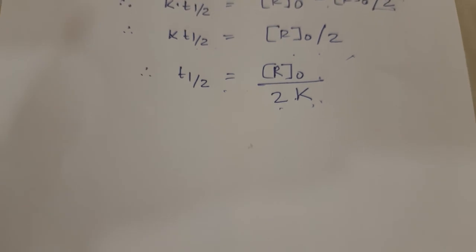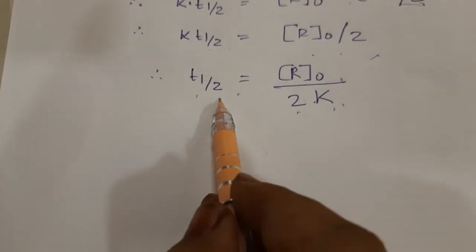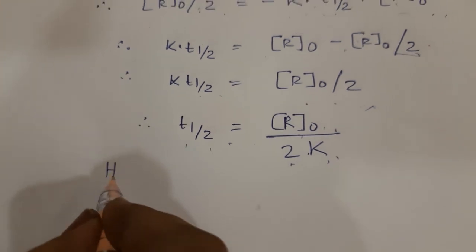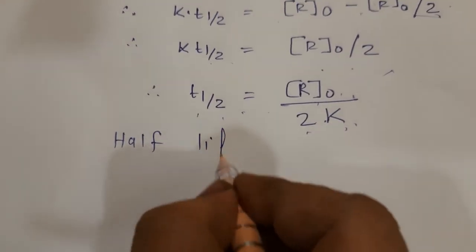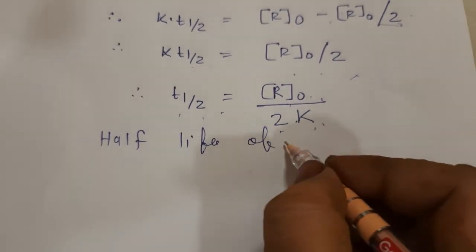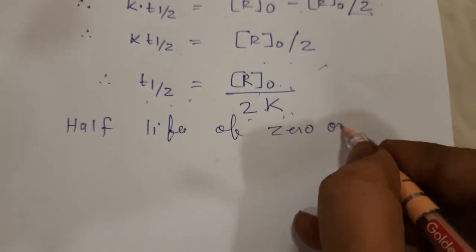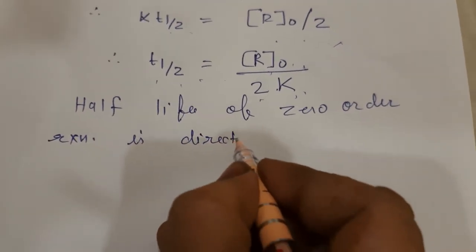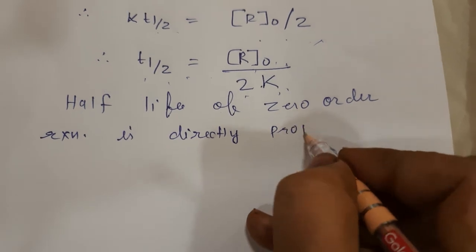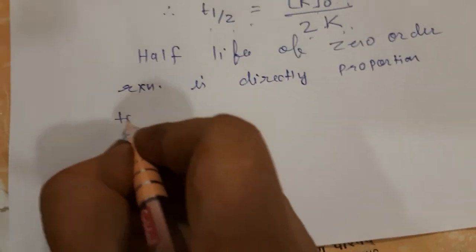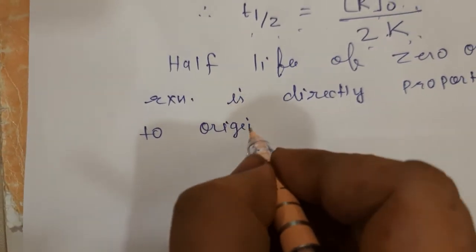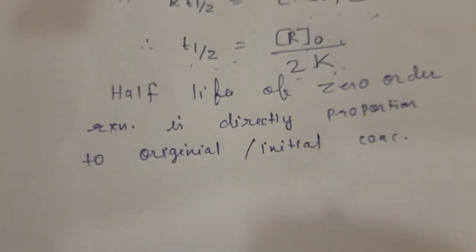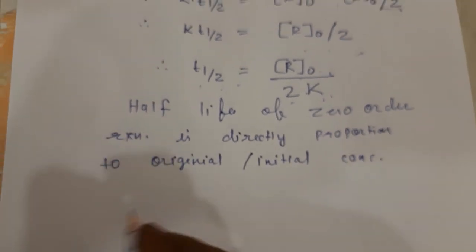An important point to remember: the half-life of a zero order reaction is directly proportional to the initial concentration. This is a common MCQ question — the half-life of zero order reaction is directly proportional to initial concentration. Remember this formula: t½ = R₀/2K.